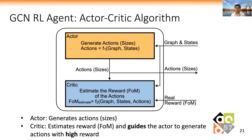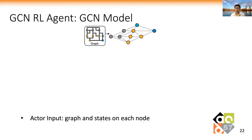We apply the actor-critic algorithm as the RL agent. The actor generates the actions. The critic estimates the reward of the actions and guides the actor to generate actions with high rewards. For both the actor and critic, we use GCN as the models. Here, we show the architecture for the actor GCN model.